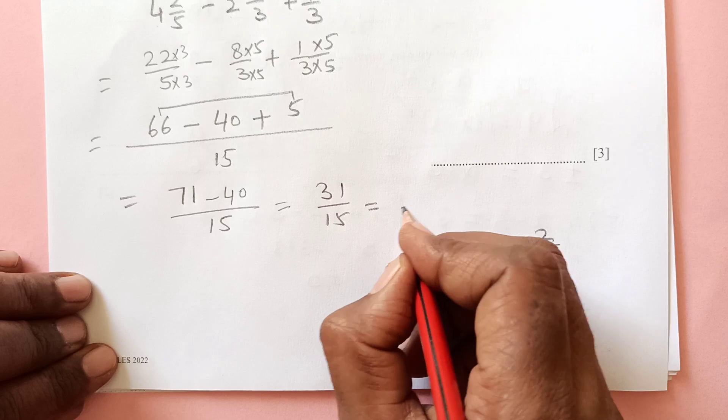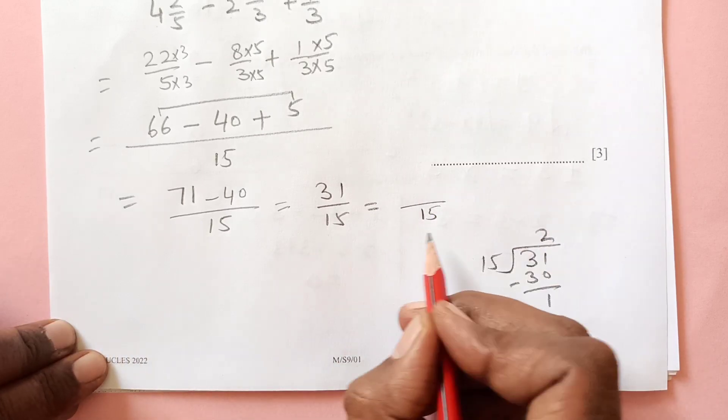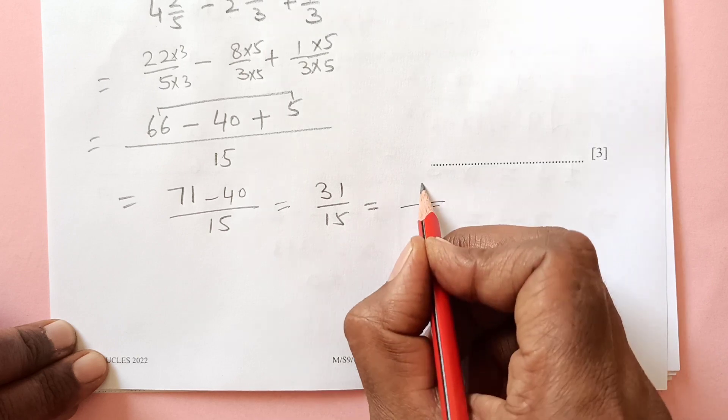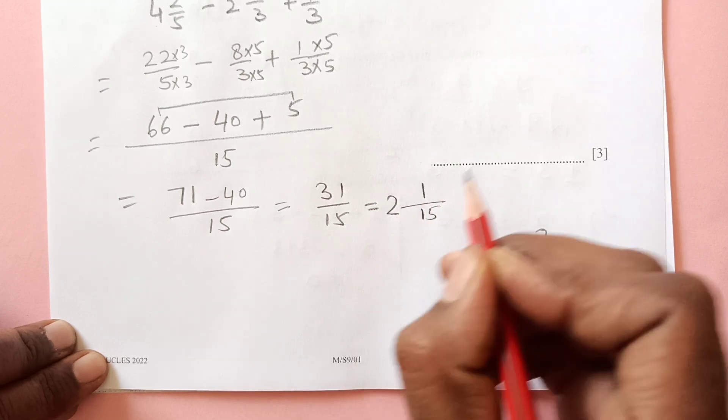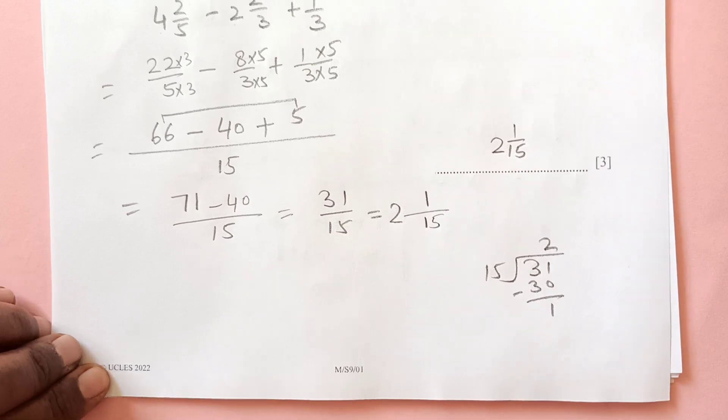Write it as a mixed fraction. 31 divided by 15, times 2 is 30, remainder is 1. The denominator 15 remains in the denominator, remainder goes up, and divisor will come here. So 2 and 1/15 is the final answer.